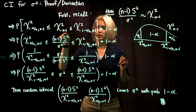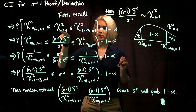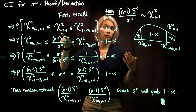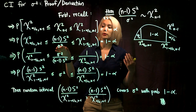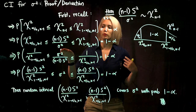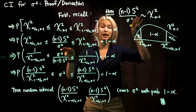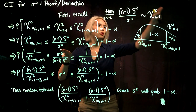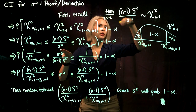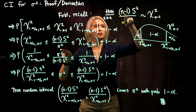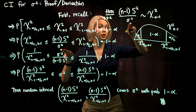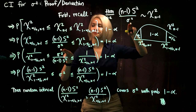Now we replace the chi-squared n minus 1 with our actual random variable that we're interested in working with. We want to have something with sigma-squared, so we work with the random variable n minus 1 times sample variance divided by population variance.